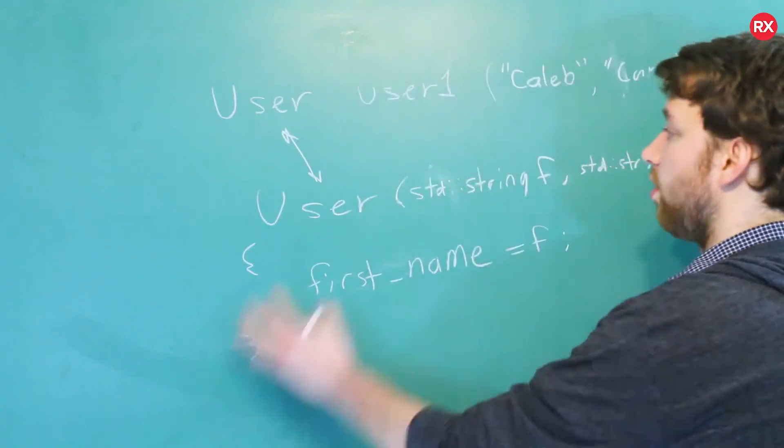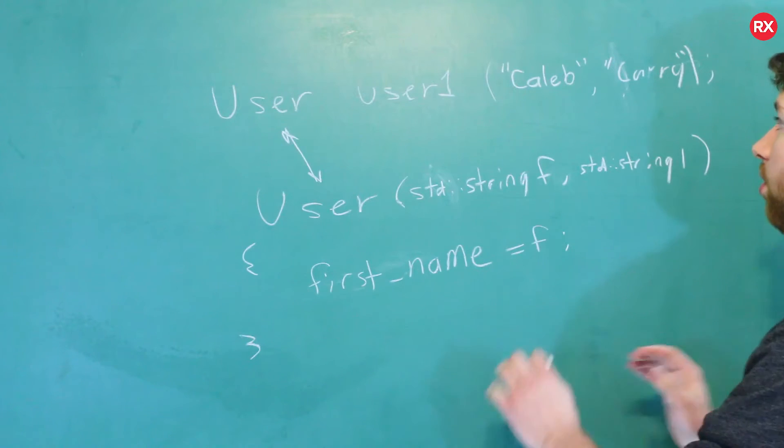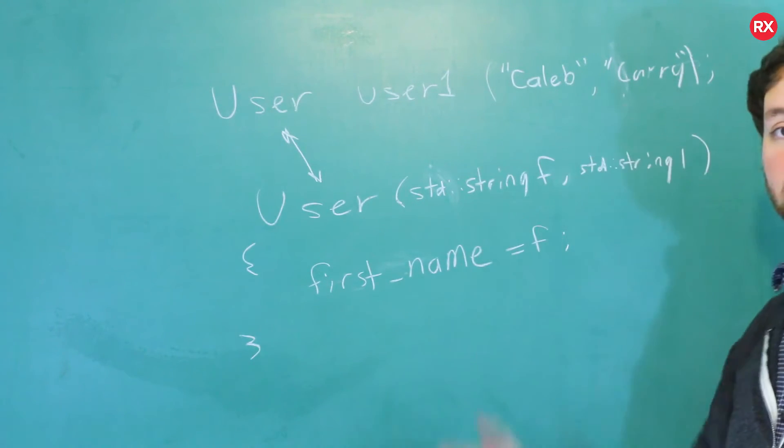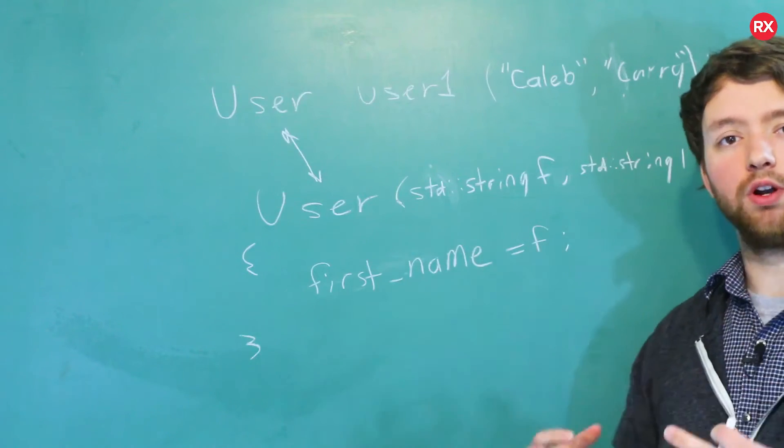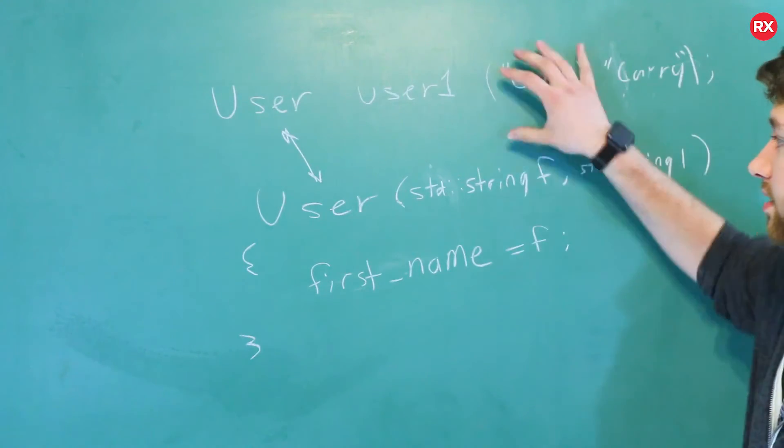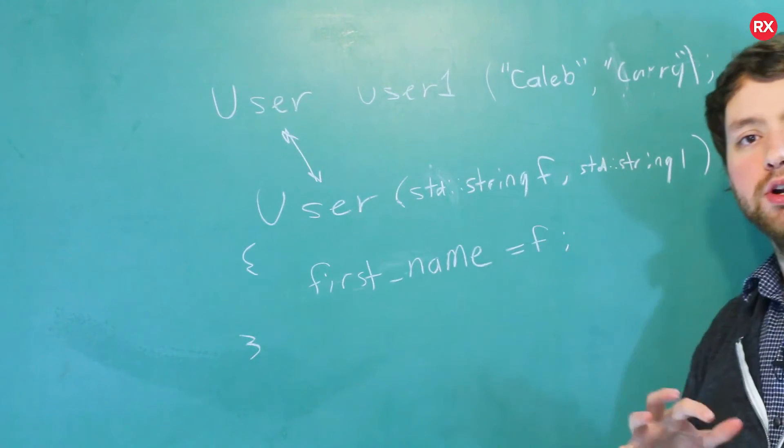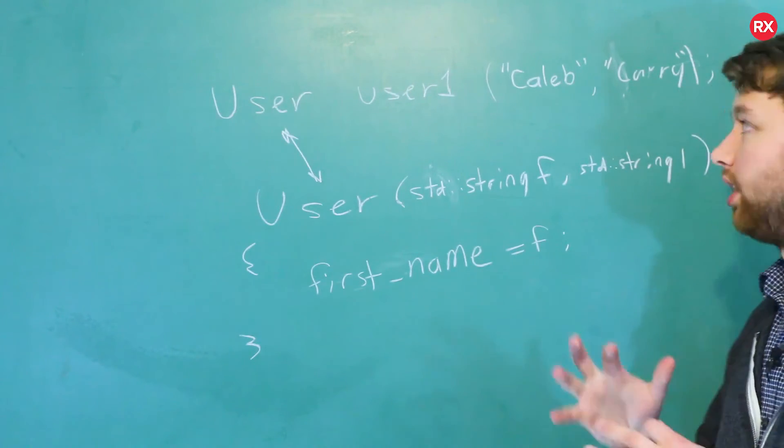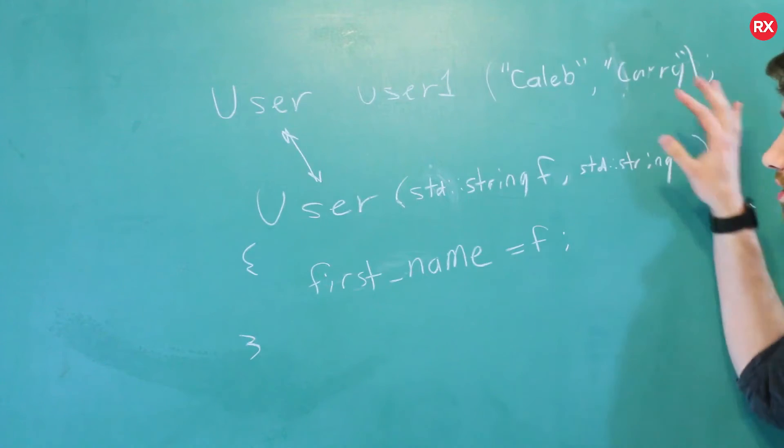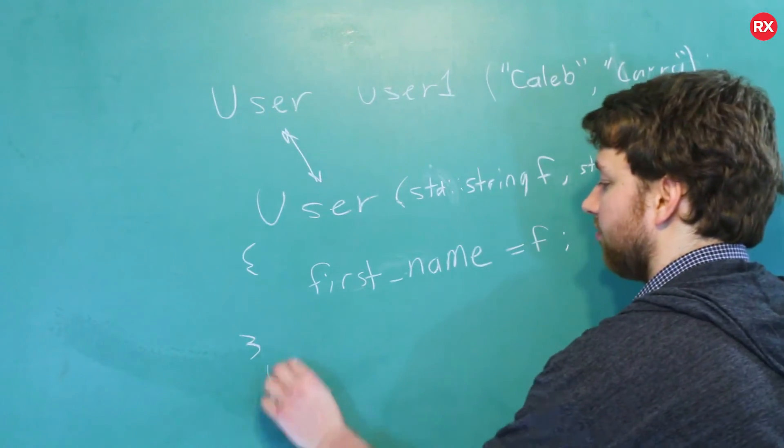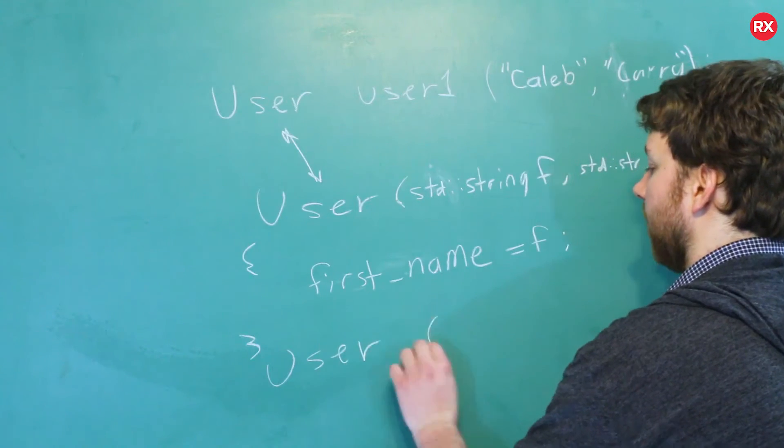So, in this situation, if this was all the code we had, we would only be able to instantiate a user by passing in their first name and last name. So, it's a way to basically force required things to be passed in by only having constructors that take arguments. If I wanted the default constructor, which would basically not require us to pass in a first name and last name, I would need to define that explicitly myself by typing it out like so.